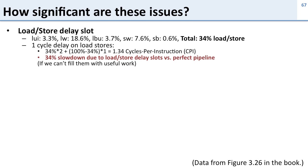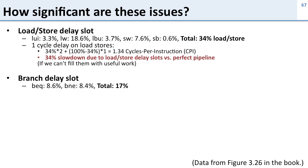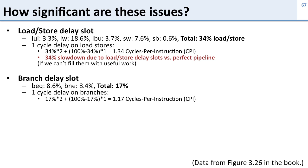Of course this assumes we can't fill those slots with useful work — if we can, they'll be less of a performance problem. Now let's look at the branch delay slot. The frequency of branches is 17% of instructions. We can do the same calculation: with a one-cycle delay on branches, 17% of the time we take two cycles and the rest of the time one cycle, giving a CPI of 1.17.